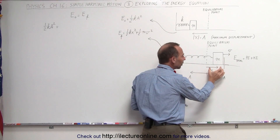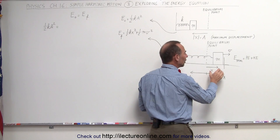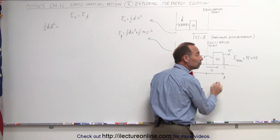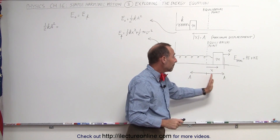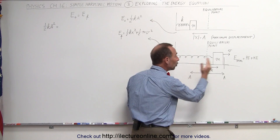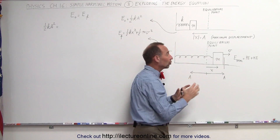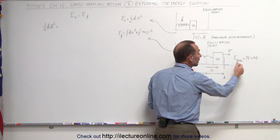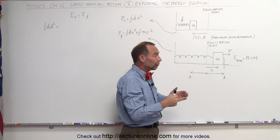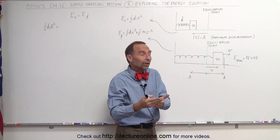Only when the block moves to the very end of its motion — when x is equal to the maximum amplitude it will reach — at that moment the block has zero velocity, and all the energy will be stored in the spring in terms of potential energy. At that point, x equals A, so the total energy in the system is one half kA squared again.